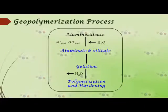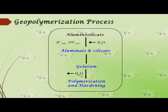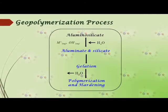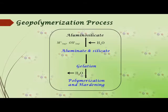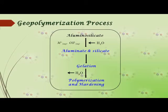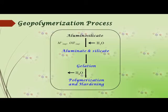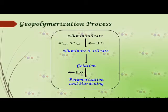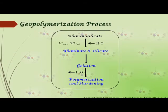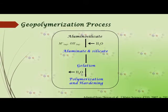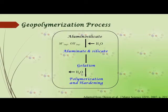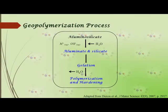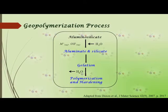A simplified model of the geopolymerization process given by Peter Duxson in 2007 is shown here. The alkali dissolves the aluminosilicate as aluminate and silicate species. These combine and form a gel, which eventually polymerizes and hardens.